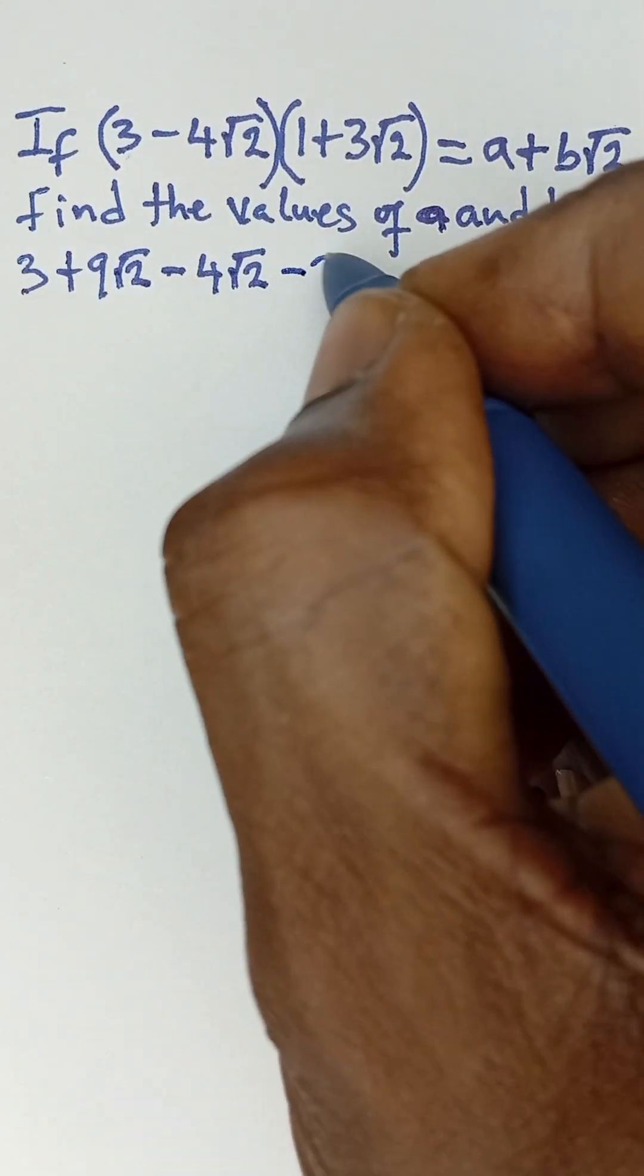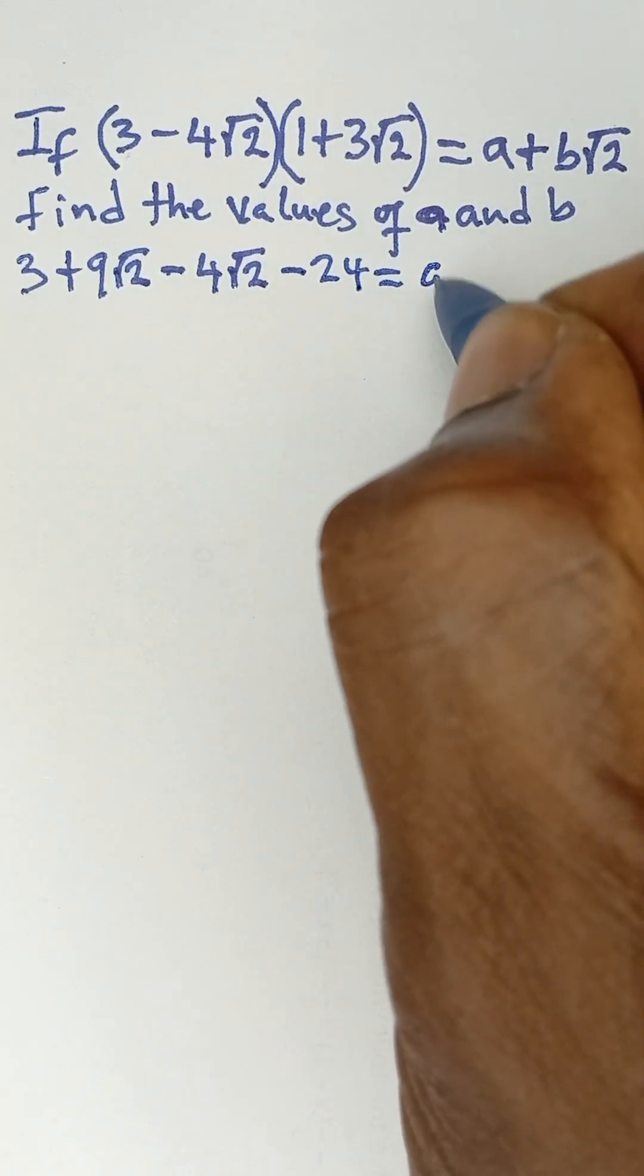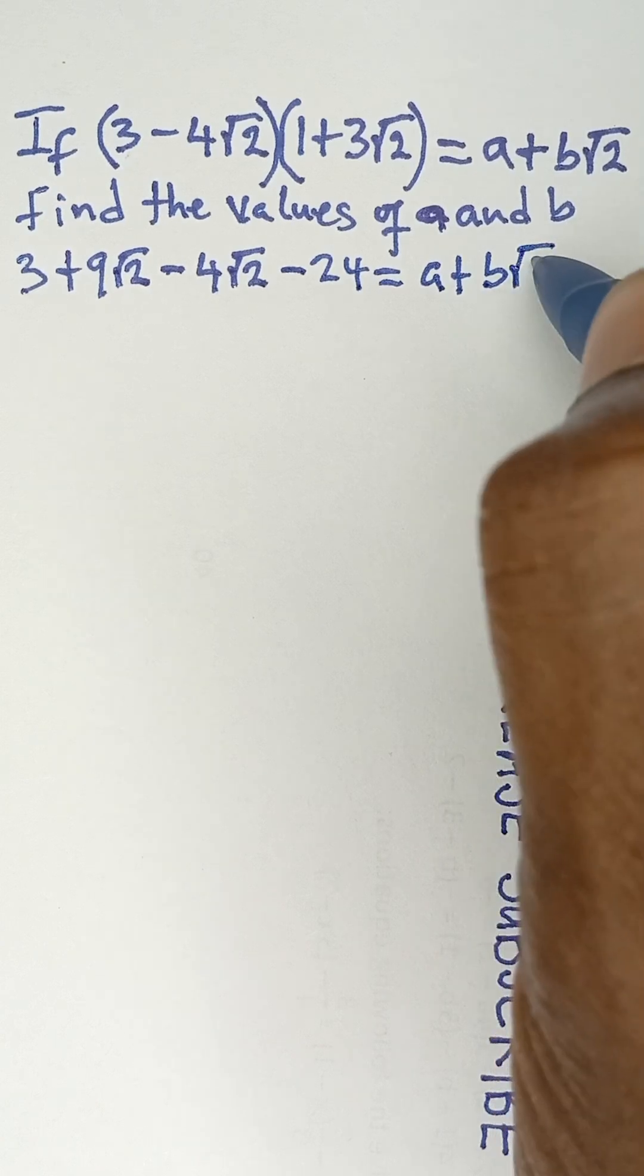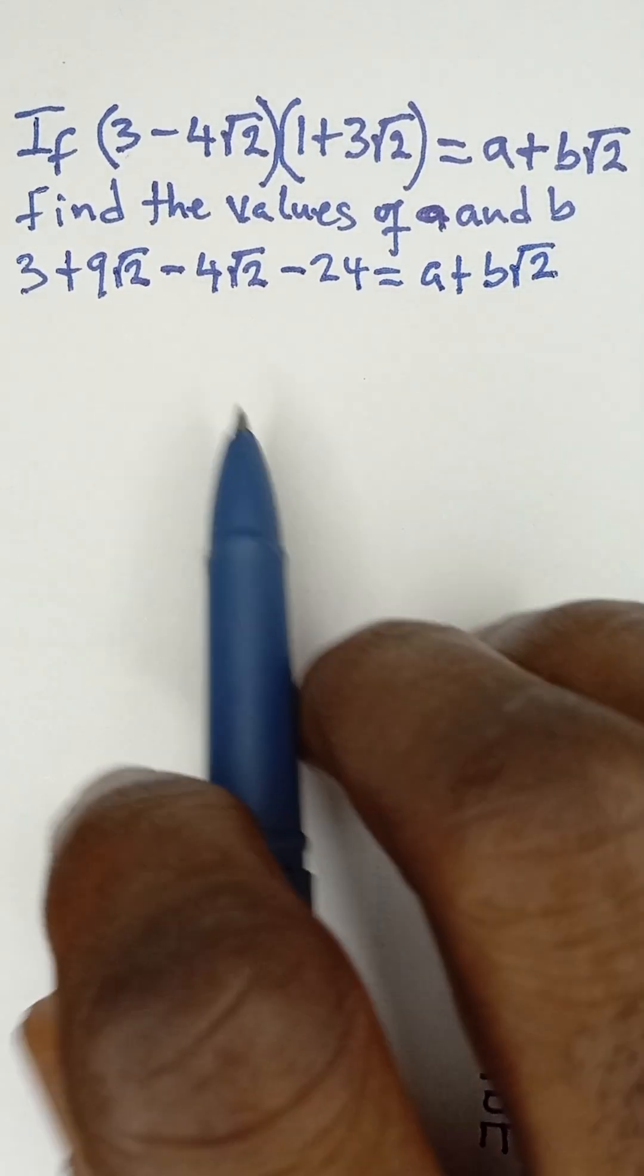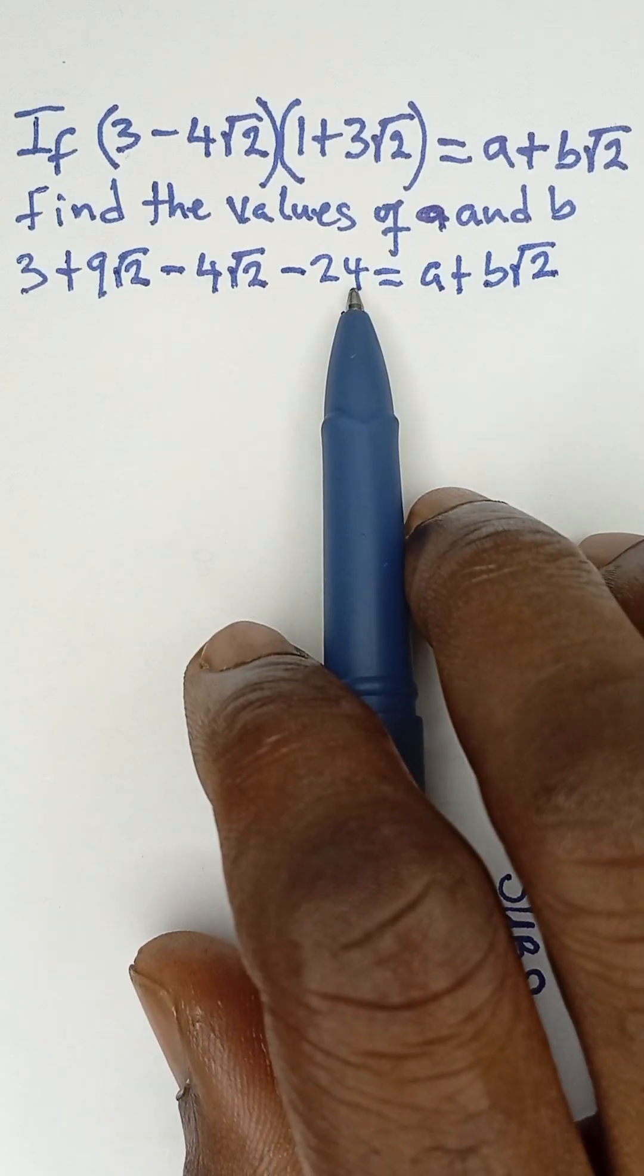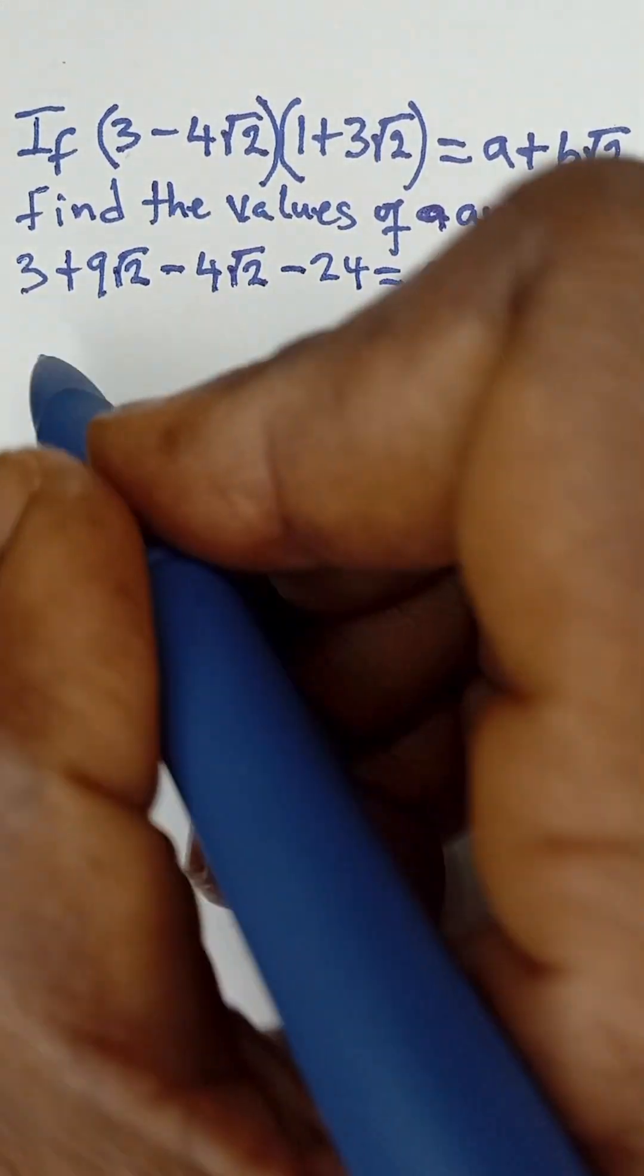So it becomes -24, and that is equal to a + b√2 that we have on the right-hand side. So now collecting terms: 3 and -24 are like terms, so 3 minus 24 will give us -21.